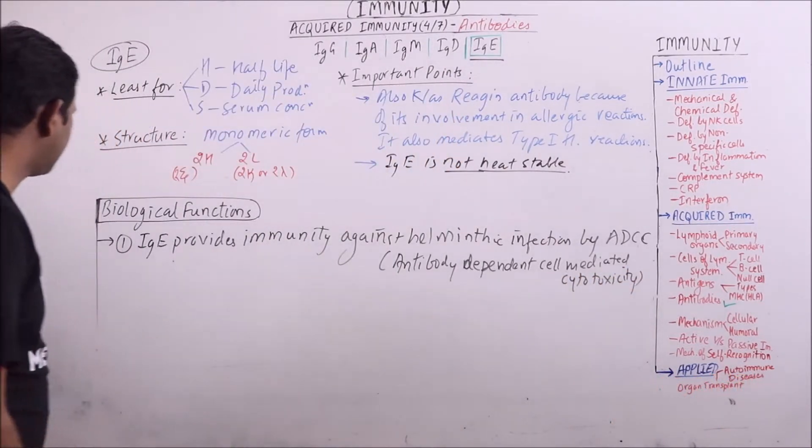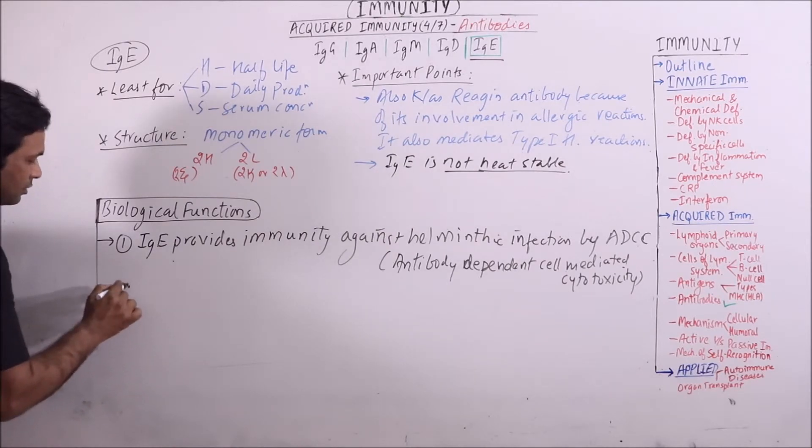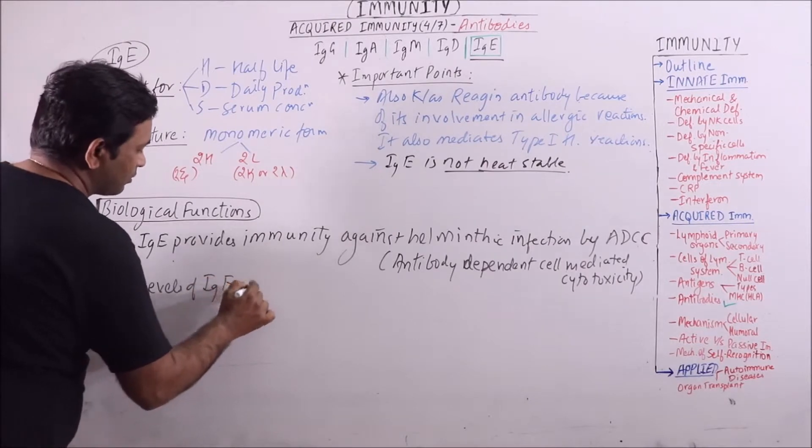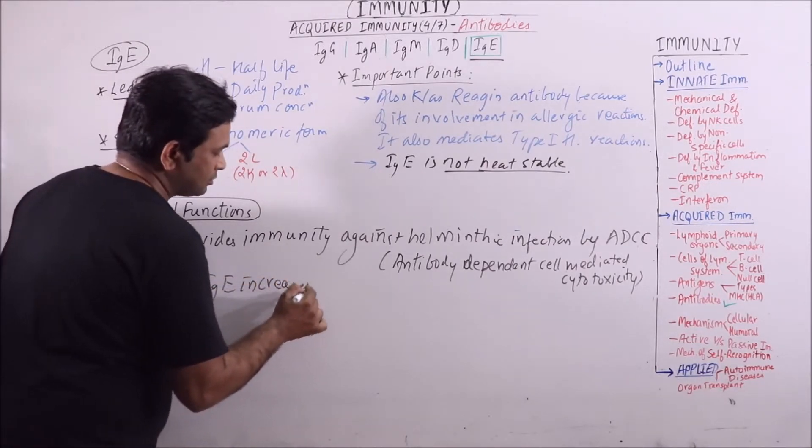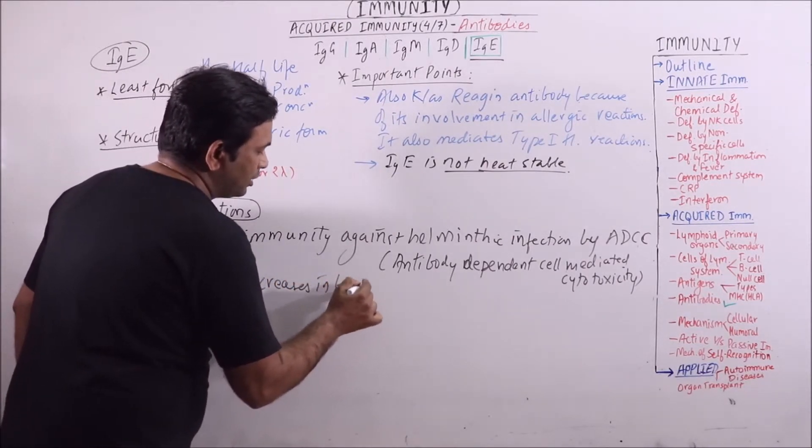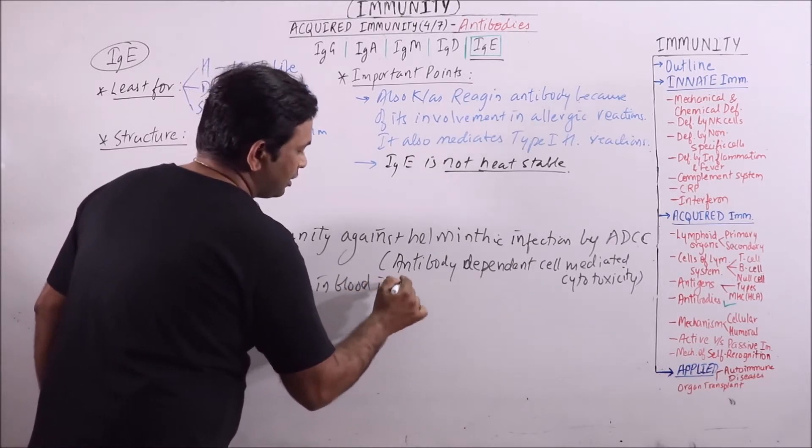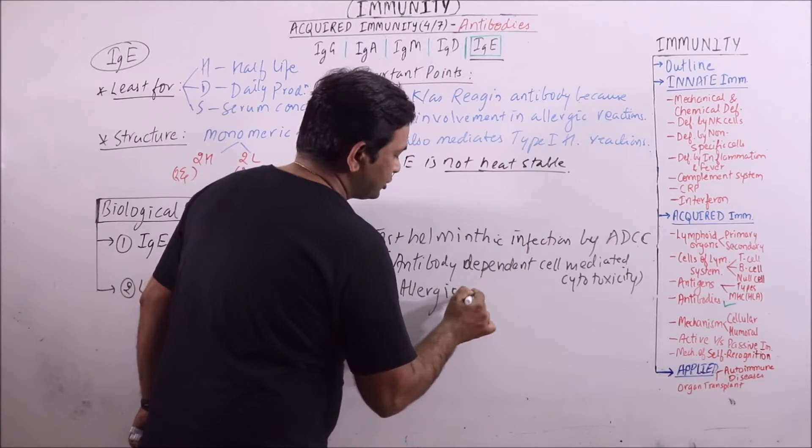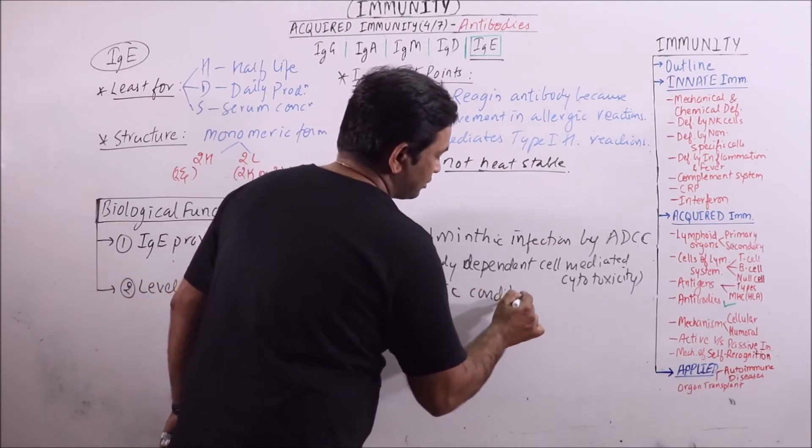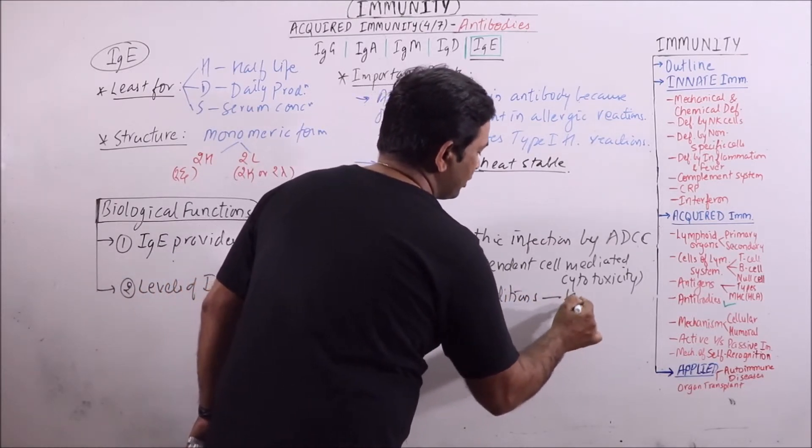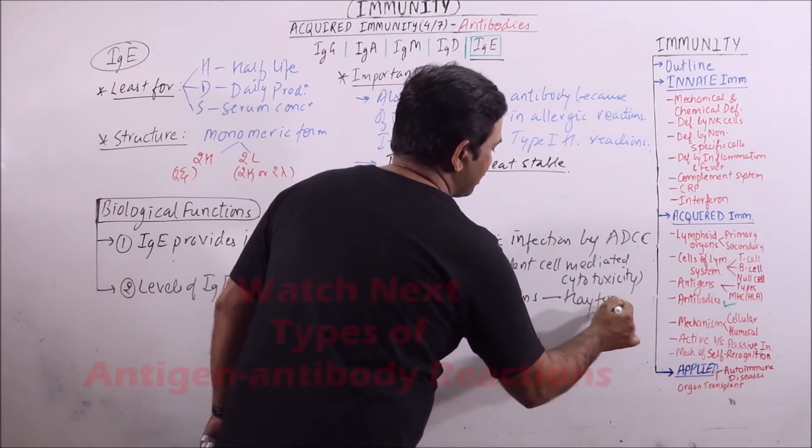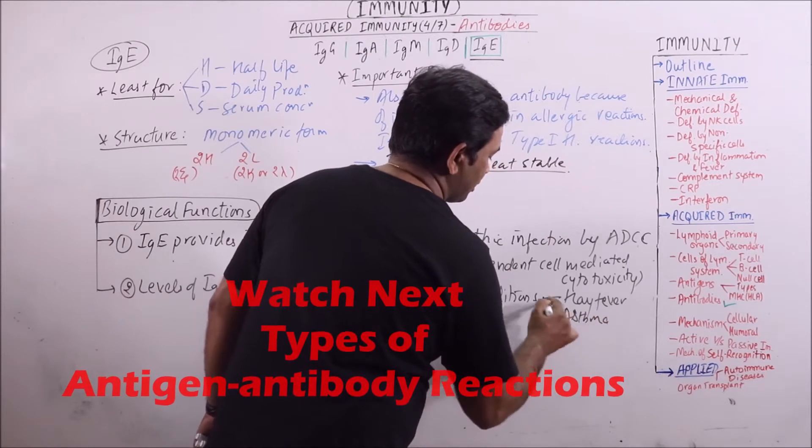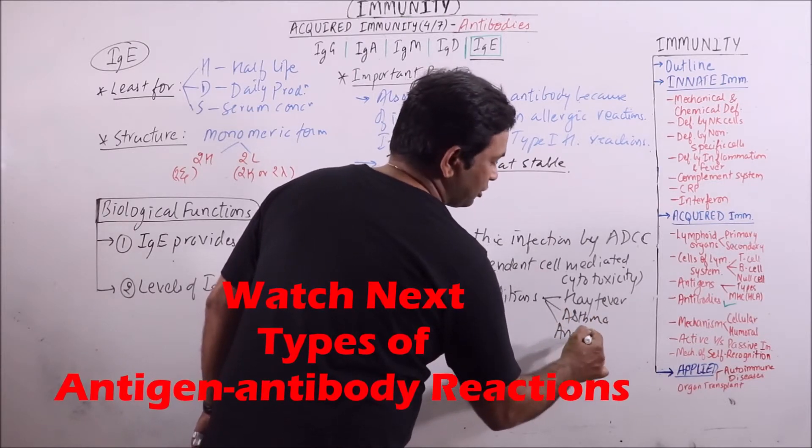Another important thing is that levels of IgE increase in blood in allergic conditions like hay fever, asthma, and anaphylactic shock.